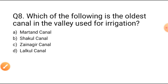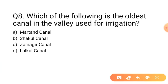Question number eight: Which of the following is the oldest canal in the valley used for irrigation? Option A: Martand Canal. Option B: Shakaul Canal. Option C: Zainagir Canal. Option D: Lal Kul Canal. Martand Canal is the oldest canal in the valley used for irrigation, so Option A is the correct answer.